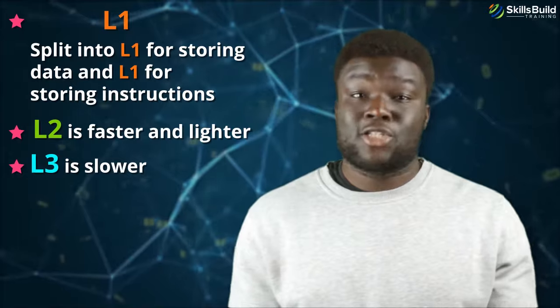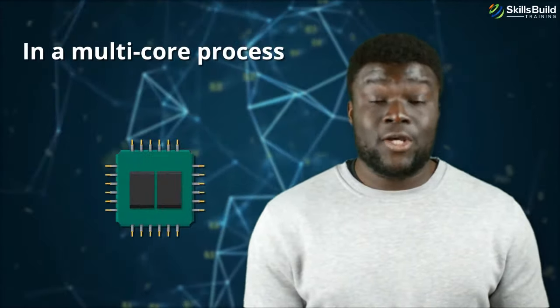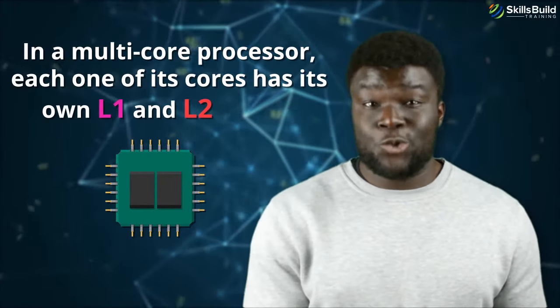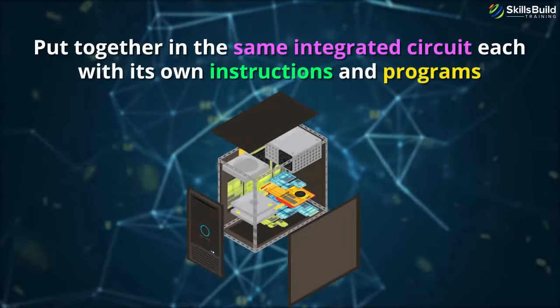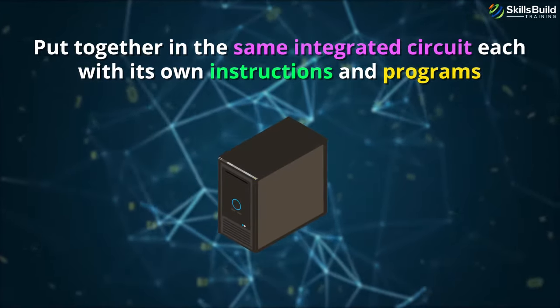L2 is faster and lighter and L3 is slower but has more storage capacity. In a multi-core processor, each one of its cores has its own L1 and L2 caches. Multi-core processors are independent processors put together in the same integrated circuit, each with its own instructions and programs.